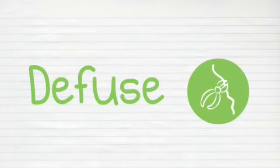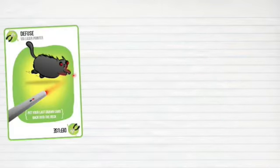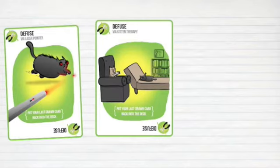Unless that player has a Diffuse card, which can diffuse the kittens using things like laser pointers, kitten therapy, and catnip sandwiches.